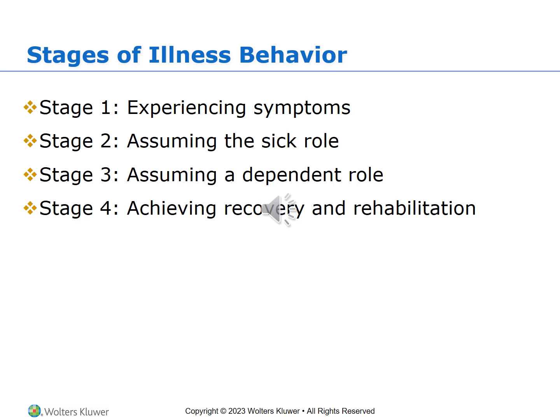In Stage 2, the person may do some research on the internet to determine what the illness is, purchase over-the-counter medication to self-medicate, or seek health care assistance from a provider for diagnosis and treatment. In our society, illness becomes legitimate when a health care provider actually diagnoses us and prescribes treatment. After seeking help, the person becomes a patient and enters Stage 3.